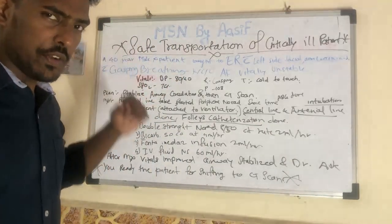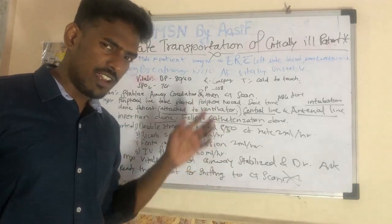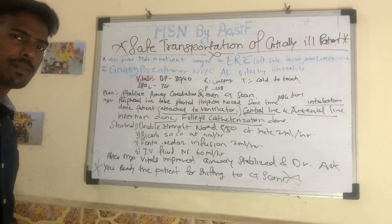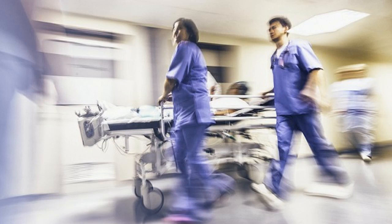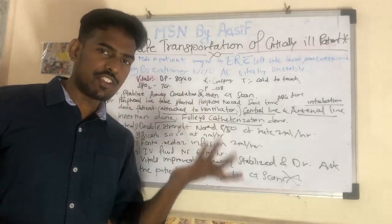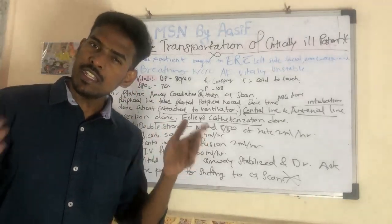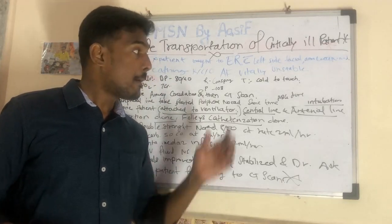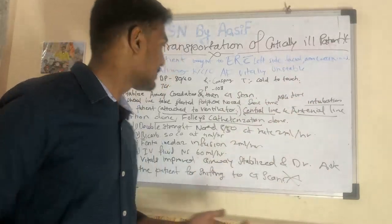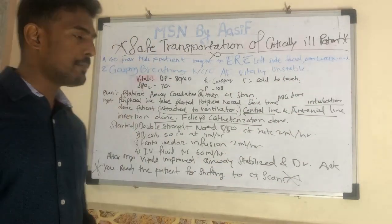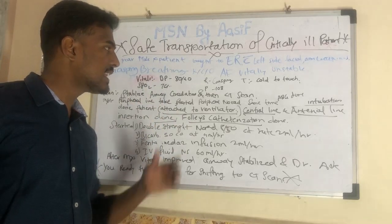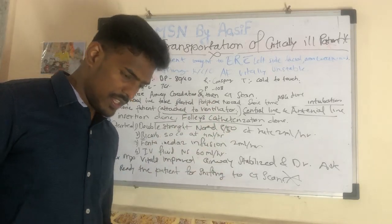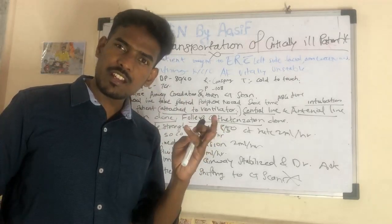We will see the scenario first. The patient is a 40-year-old male, patient name XYZ, brought to the ER with left-sided arm weakness, slurred speech, facial drooping, and gasping breathing. He is a known case of atrial fibrillation but is vitally unstable. Vitals: BP is 80/40, saturation is 76%, pulse is 108, and skin is cold to touch. Airway and circulation are compromised.